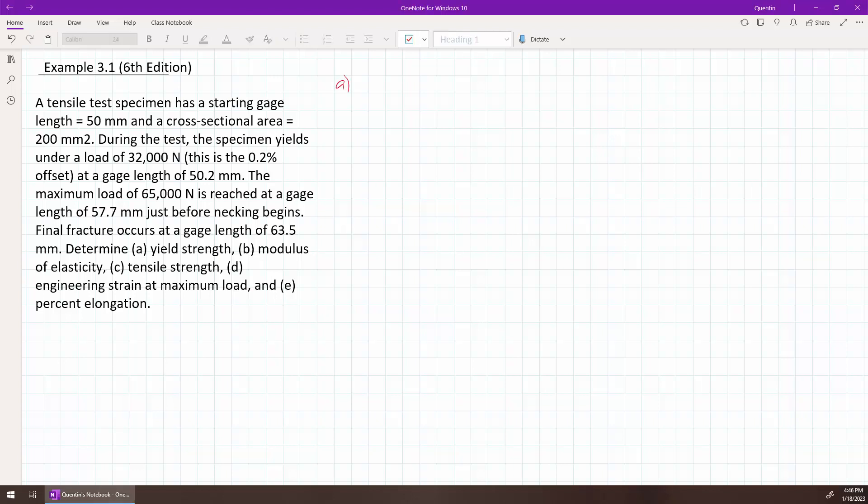So let's start with A, the yield strength. So what is yield strength? Yield strength is a point where the elastic deformation stops and it starts to become plastic deformation. And how do we calculate that?